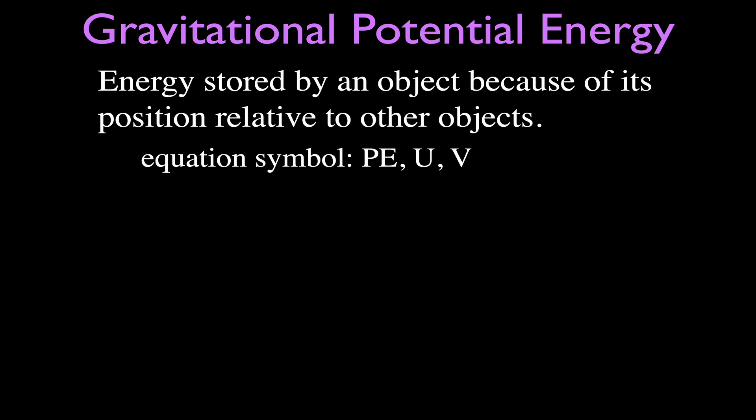Now here are the equation symbols we use for potential energy. You will see this quite often: PE. You will often see a U for energy, and for potential energy you might see a little subscript P or PE. And occasionally the V. The most common equation symbols you will see are PE for potential energy, maybe a little subscript g for gravitational potential energy, and U.